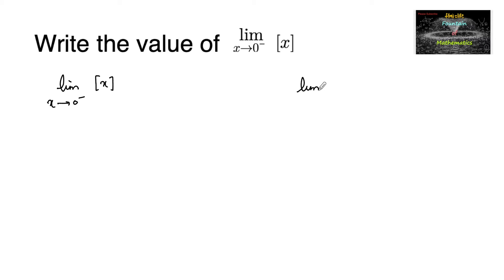Since we know that limit x tends to a minus f(x) is equal to limit h tends to 0 f(a - h), we can write here limit h tends to 0 [0 - h], which is limit h tends to 0 [-h].